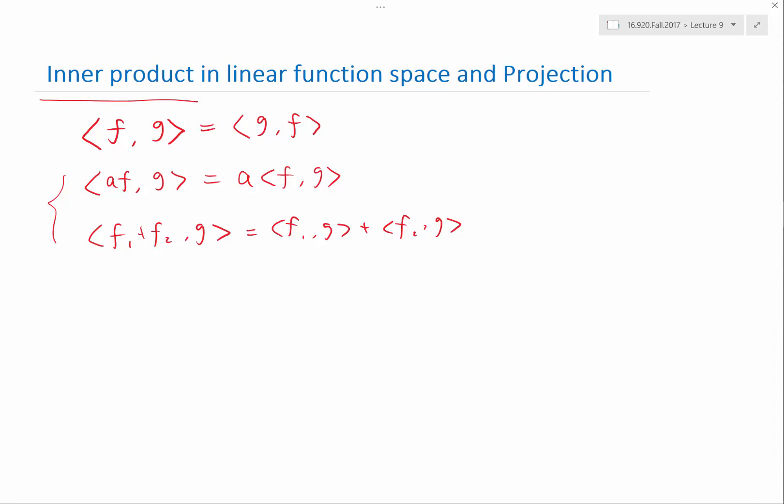And other things like there is also this triangular inequality you have to satisfy. Another thing is, f and f is always greater than 0 unless f is equal to 0. So if f is equal to 0, you can apply this rule and show that f and f has to be equal to 0.